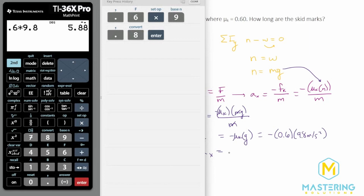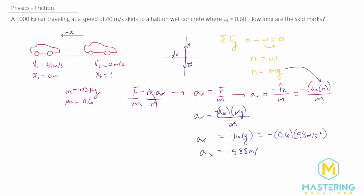So the acceleration in the x direction is negative 5.88 meters per second squared. Now that we have the acceleration, let's use a kinematic equation to solve for how far we went. Since we don't have any time, we use: v-final squared equals v-initial squared plus 2 times acceleration times delta x. We can also note that x-final minus x-initial equals delta x, and since x-initial is zero, x-final is the same as delta x. The final velocity is 0.